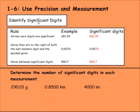And then we're going to learn about significant digits here. So what are significant digits? And I have some rules here to help guide us. First rule is all non-zero digits are significant. So in this example, 281.39, I have all five highlighted because none of them are zeros. So anything that's not a zero is significant.